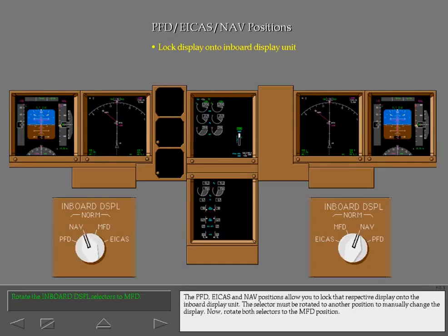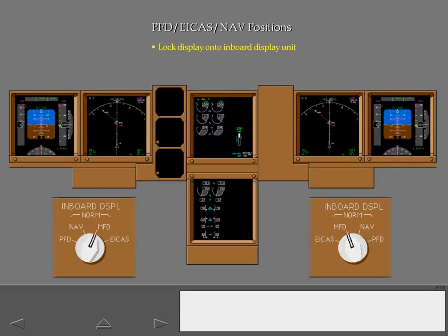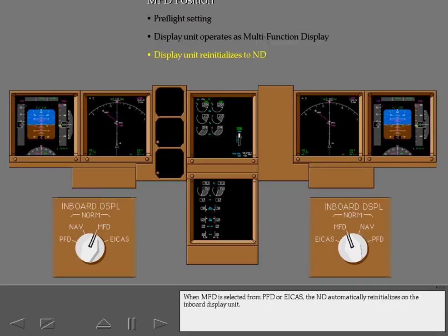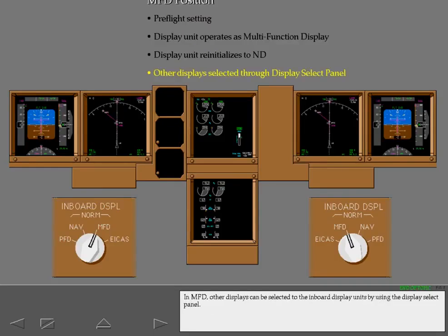The PFD, ICAS, and NAV positions allow you to lock that respective display onto the inboard display unit. The selector must be rotated to another position to manually change the display. Now rotate both selectors to the MFD position. NAV is one of two normal selector positions. MFD is the other normal position and also the preflight setting. Maximum display flexibility is achieved by operating the inboard display units as multi-function displays. When MFD is selected from PFD or ICAS, the ND automatically reinitializes on the inboard display unit.